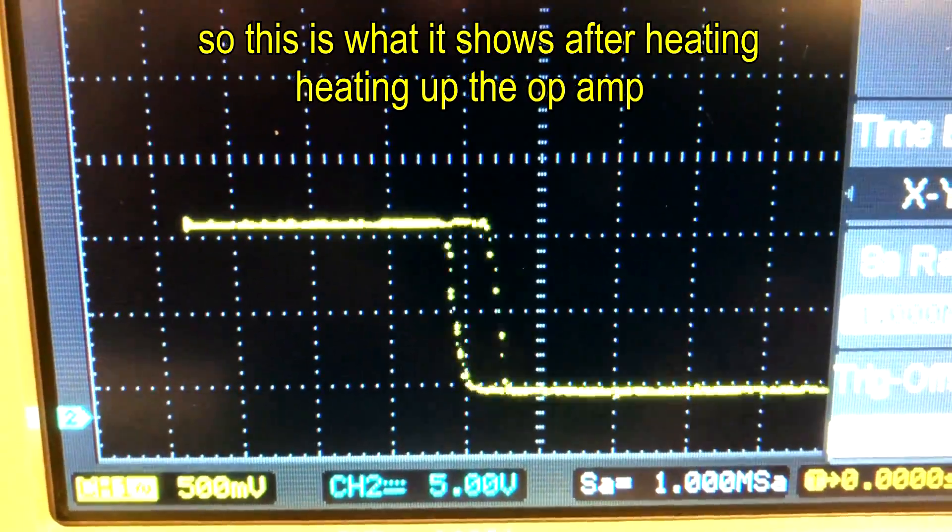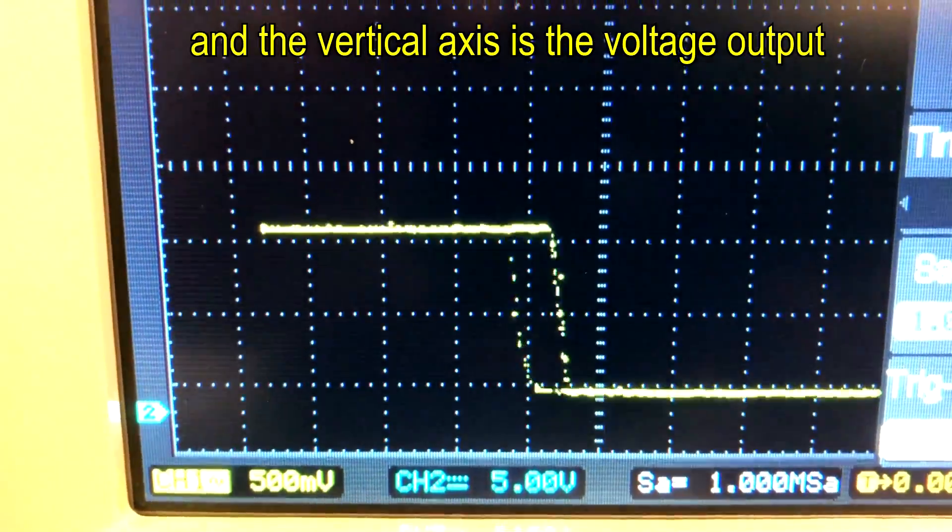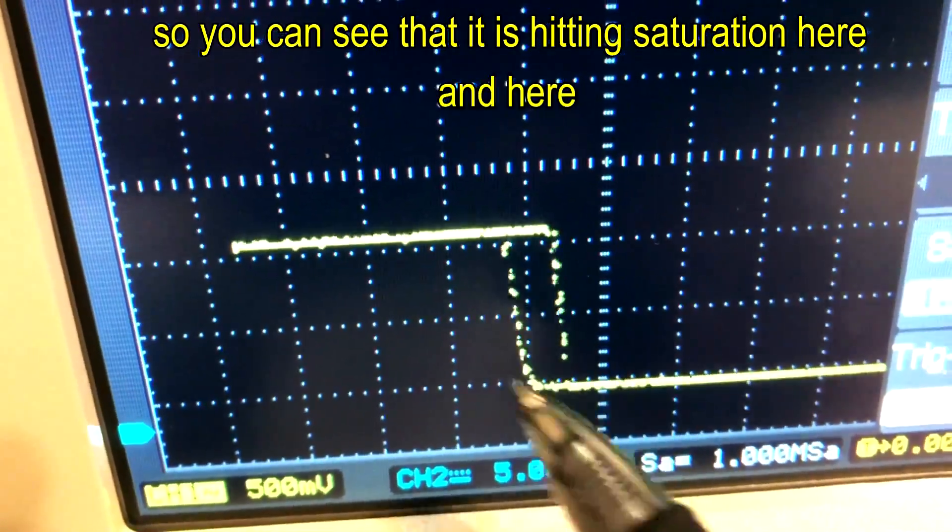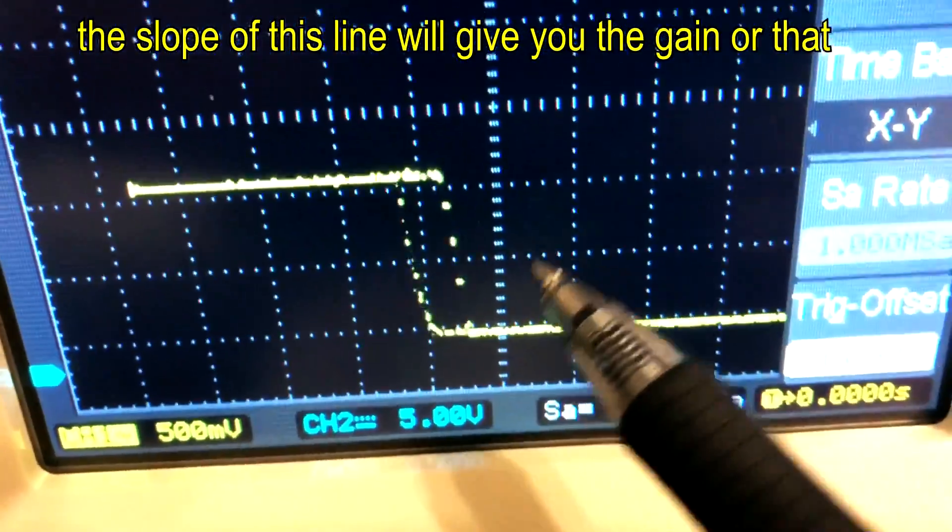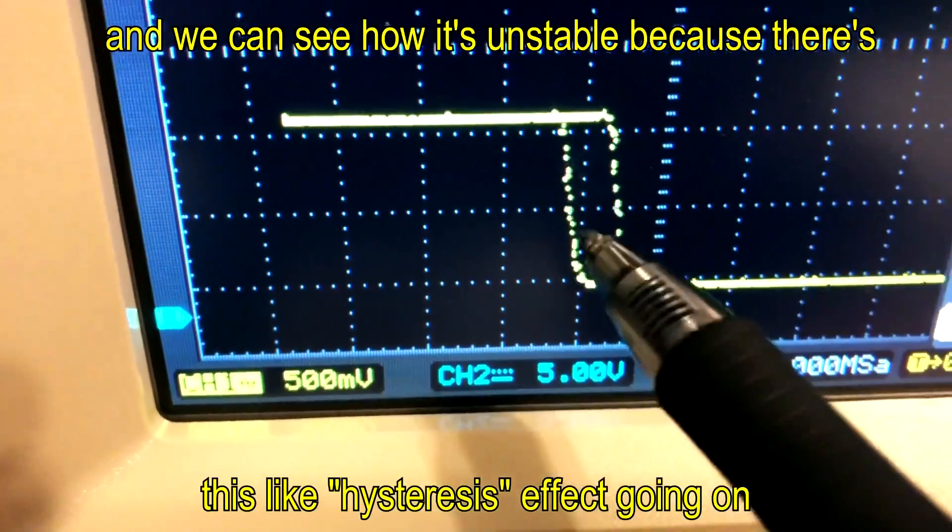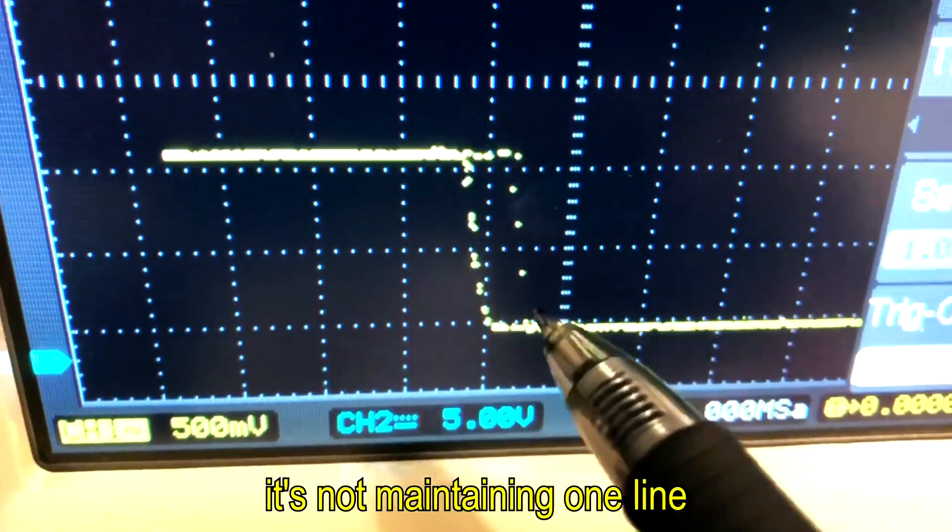This is what it shows after heating up the op-amp. The horizontal axis is the voltage input and the vertical axis is the voltage output. You can see that it's hitting saturation here and here. The slope of this line will give you the gain. And we can see how it's unstable because there's this hysteresis effect going on.